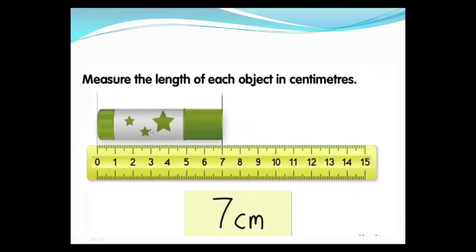Now see another example. This is the marker. You are going to find out the length of this marker. This is a smaller object and we use centimeters to measure smaller objects. This marker is placed from zero to seven. So the length of this marker is seven centimeters. We write here: seven centimeters.